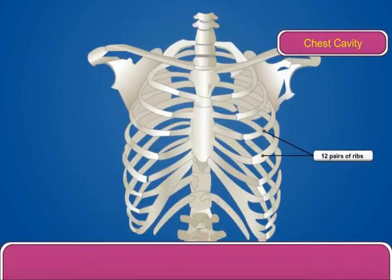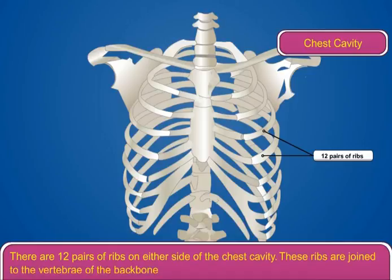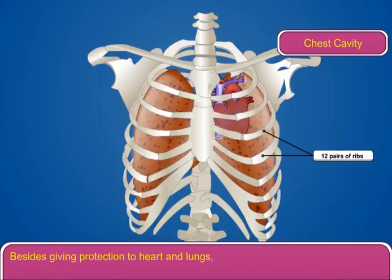There are 12 pairs of ribs on either side of the chest cavity. These ribs are joined to the vertebrae of the backbone behind and to the breastbone in front. Besides giving protection to the heart and lungs, ribs and breastbone also help in breathing movements.